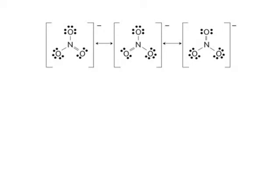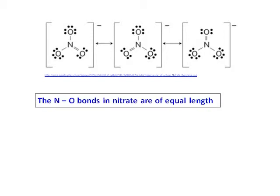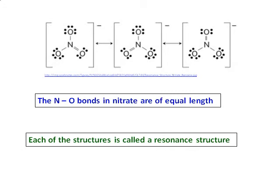But the double bonds can be moved around and can be between any of the oxygen and nitrogen. The three resonance structures of nitrate are shown over there. As before, the nitrogen-oxygen bonds are of equal length, and each one of these structures is called a resonance structure of nitrate.